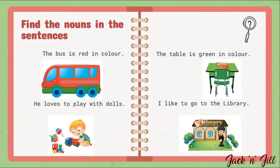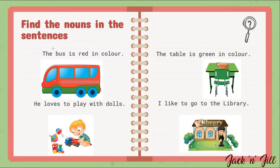This is a sentence. Let's find the noun. Look at the first picture — what do you find here? This is a red color bus. Shall I read the sentence? The bus is red in color. What is the noun here? The bus is the noun — the bus is an example of a thing. Excellent, kids!